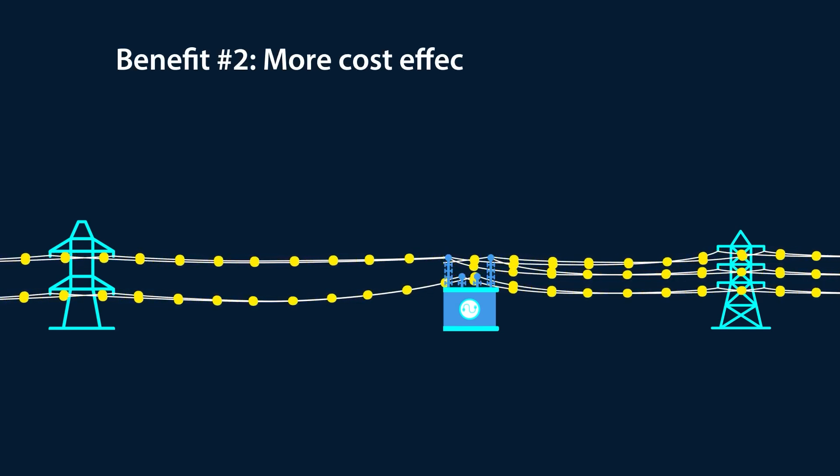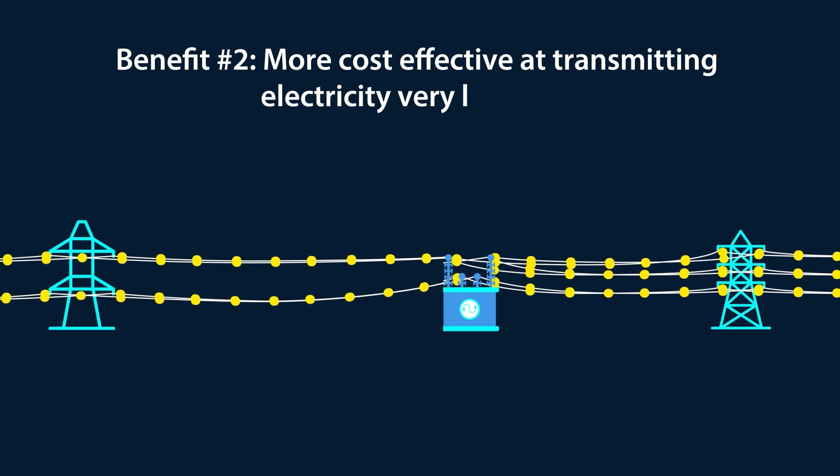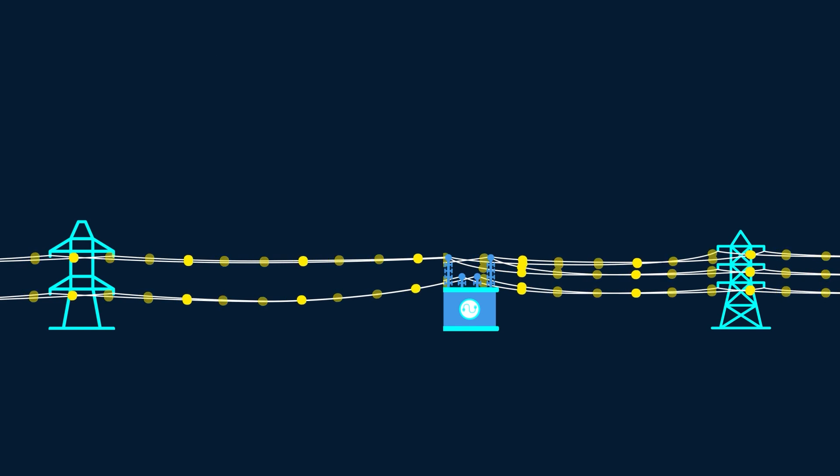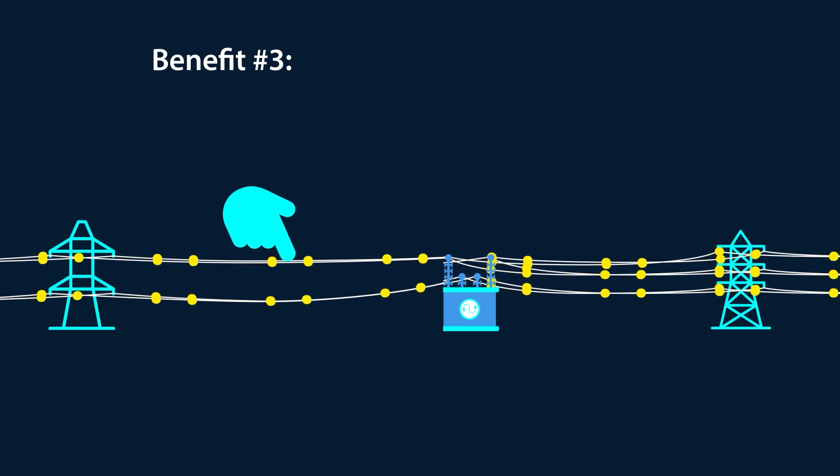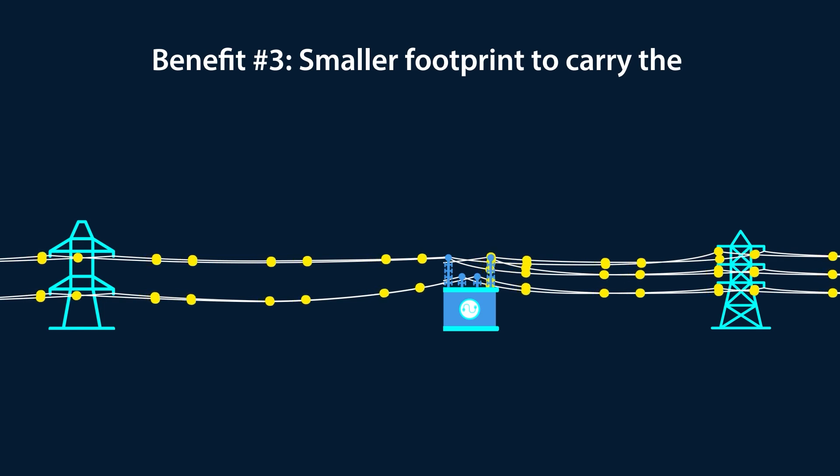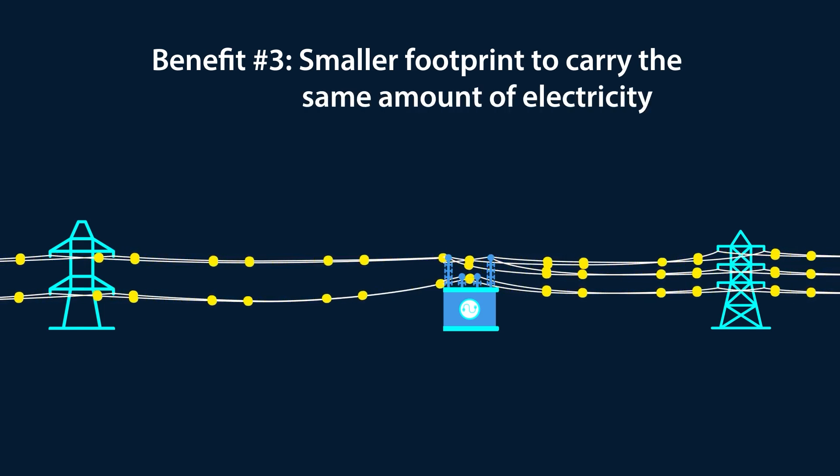Second, HVDC lines are more cost-effective at transmitting electricity very long distances. It's normal to lose some electricity when transmitting at long distances, but HVDC lines lose less compared to AC lines. Third, because an HVDC line has two wires compared to three on AC lines, it has a smaller footprint while carrying the same amount of electricity.